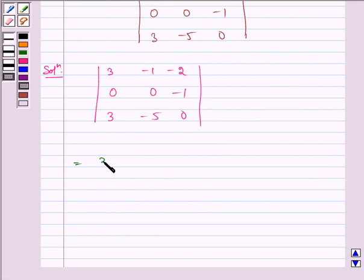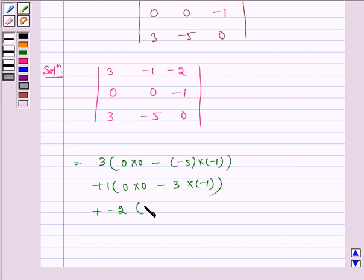Which is equal to 3 multiplied by 0 into 0 minus minus 5 into minus 1, plus 1 into 0 into 0 minus 3 into minus 1, plus minus 2 into 0 into minus 5 minus 0 into 3.